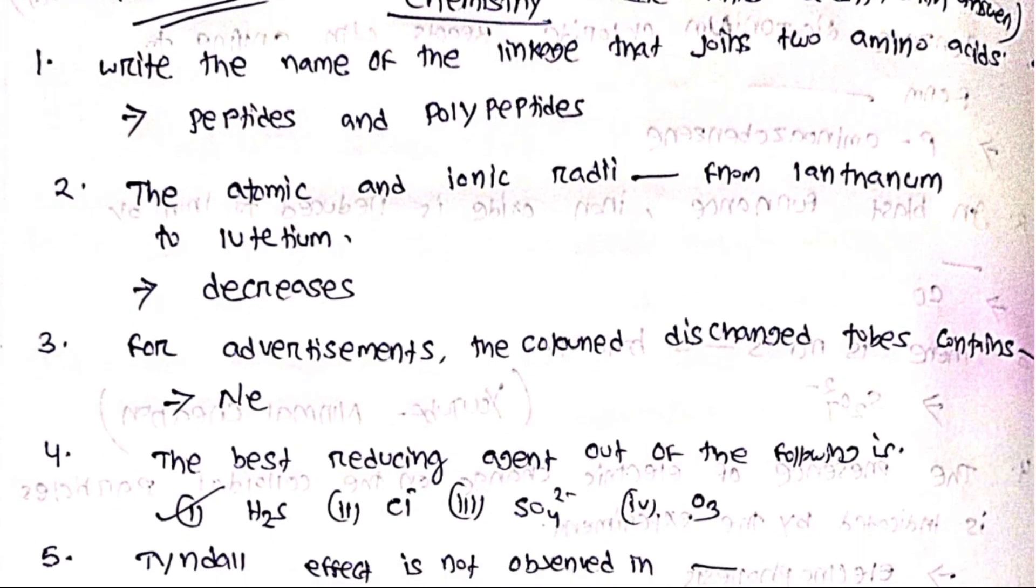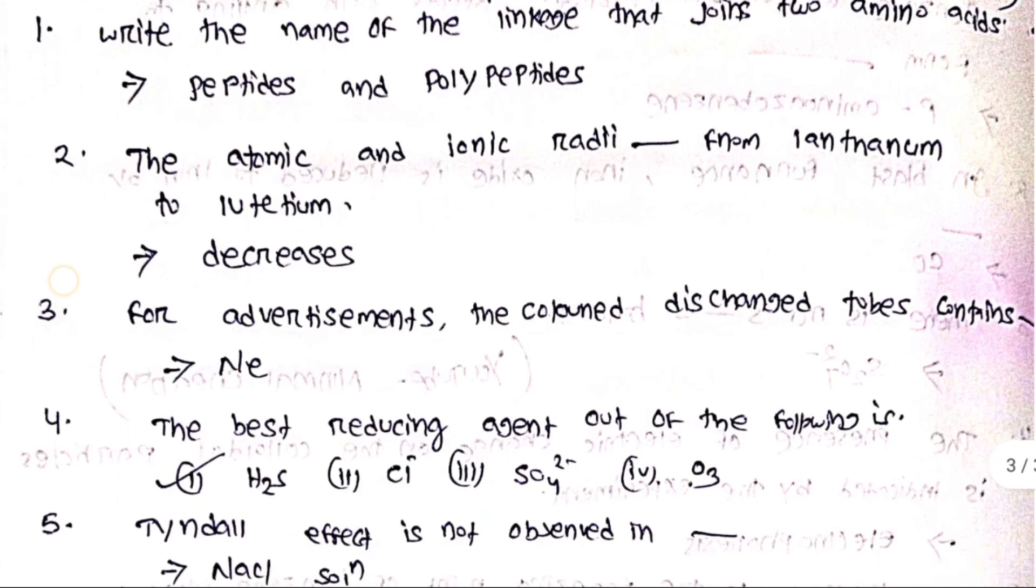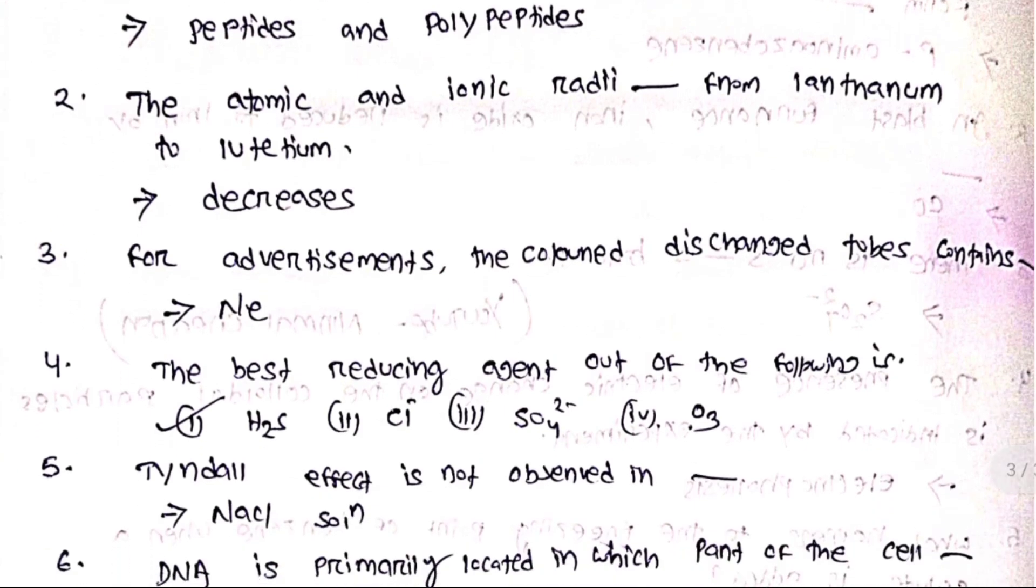Write the name of the linkage that joins two amino acids: peptides and polypeptides. The atomic and ionic radii from lanthanum to lithium decreases.